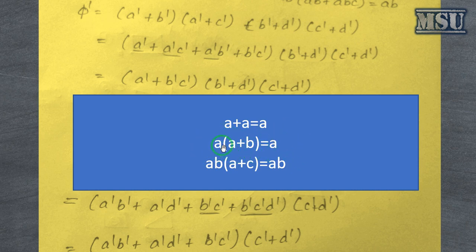If a is true, then automatically if this a plus b is also true, so the truthness of this is equivalent to a. Similarly, ab into a plus c which is truthness depending upon only ab.